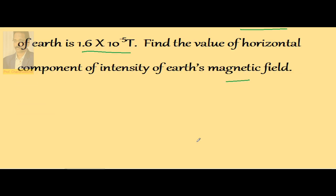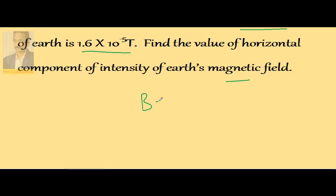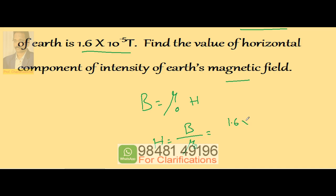We know that B is equal to μ₀ times H, so the question is to calculate H. H equals B by μ₀. B value is 1.6 × 10⁻⁵ and